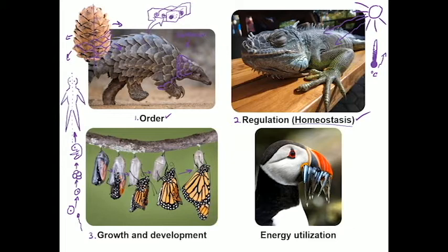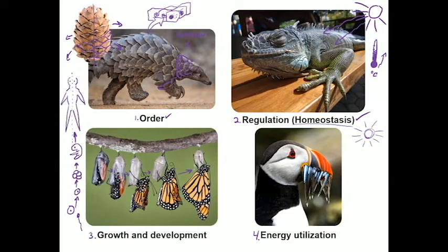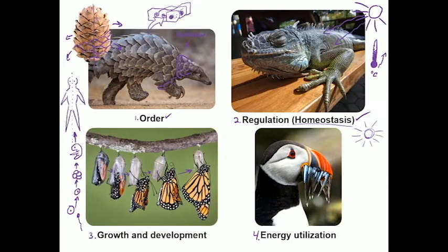Another feature that living organisms have to exhibit is energy utilization. Living organisms are systems, and systems do stuff. Your body does a lot of work constantly, and work requires energy. Different organisms get their energy from different locations. This puffin will meet his energy requirements with this mouth full of fish, but a plant will meet its energy needs through photosynthesis, using sunlight to get enough energy to grow and maintain homeostasis.